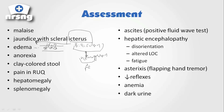We're also going to notice anorexia in our patients. They're going to have clay-colored stools, pain in the right upper quadrant — that of course is where our liver is located — hepatomegaly, splenomegaly, and ascites.